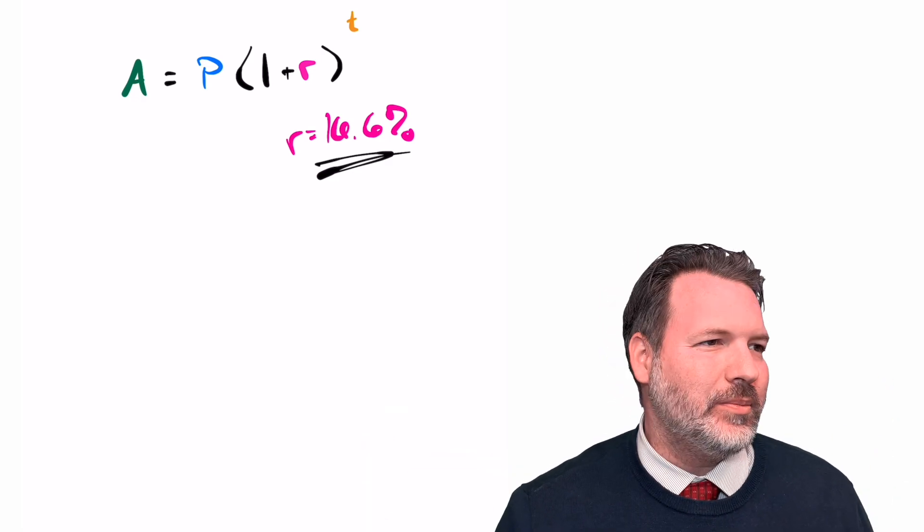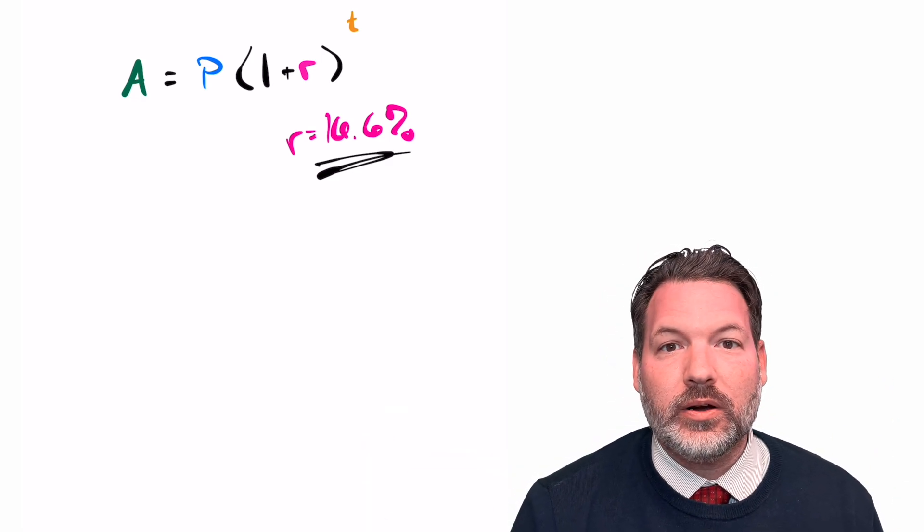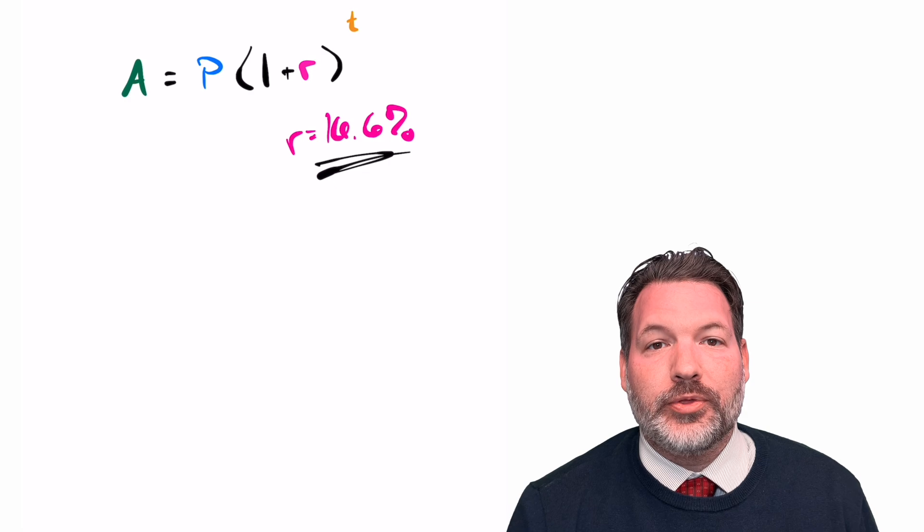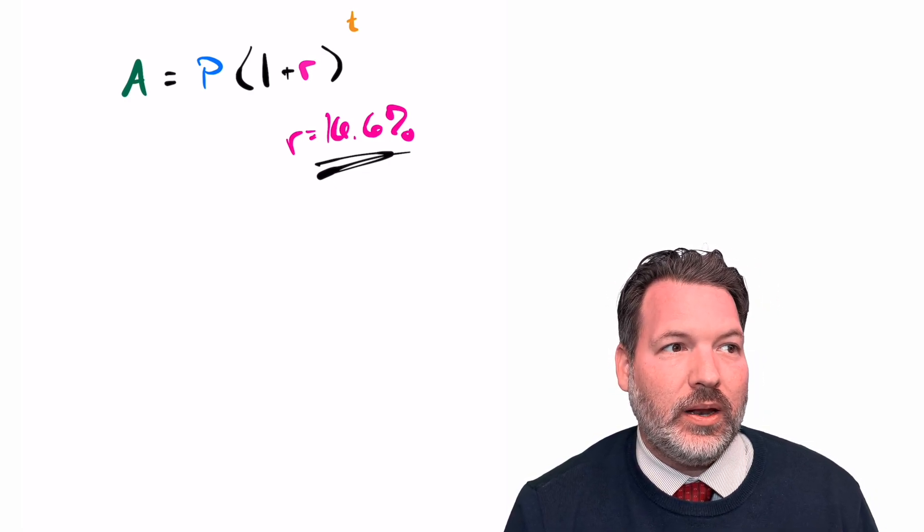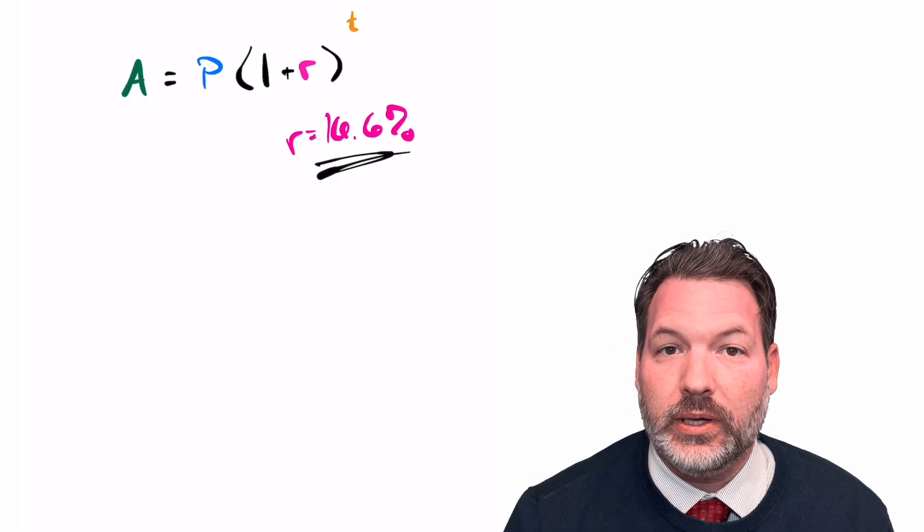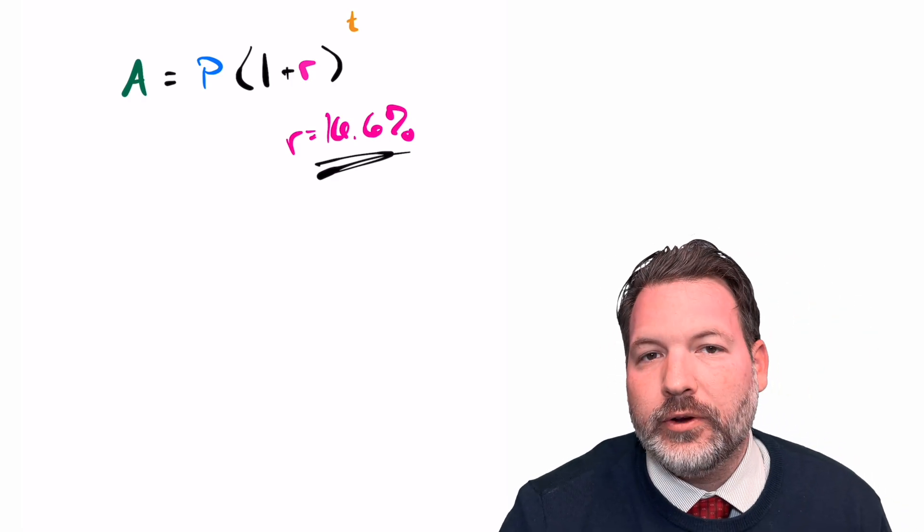Or maybe, you know, logarithms and exponential stuff is weird. Maybe it takes me half as much time, 30 years. But still, 30 years with a million dollars sounds better to me than having to wait 60 years for $10 million. Well, here's how we could figure it out.